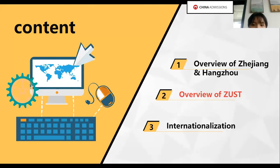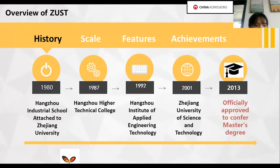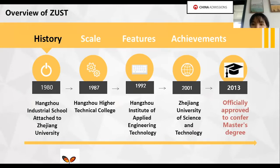Now I will make a brief introduction about Zhejiang University of Science and Technology. Our university was established in 1980, so this year 2020 happens to be the 40th anniversary of our university. I want to invite all of you to come to our university this year to celebrate the 40th birthday with us and join the anniversary celebrations.